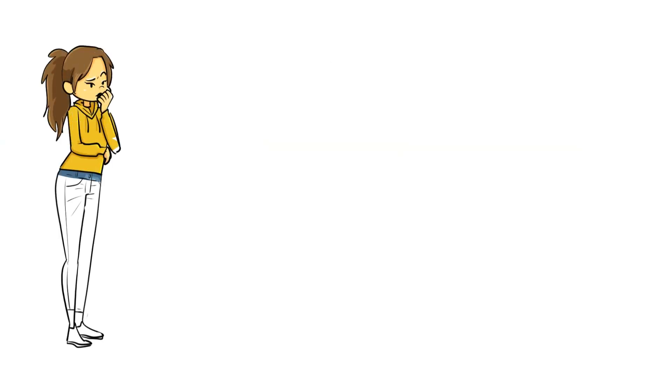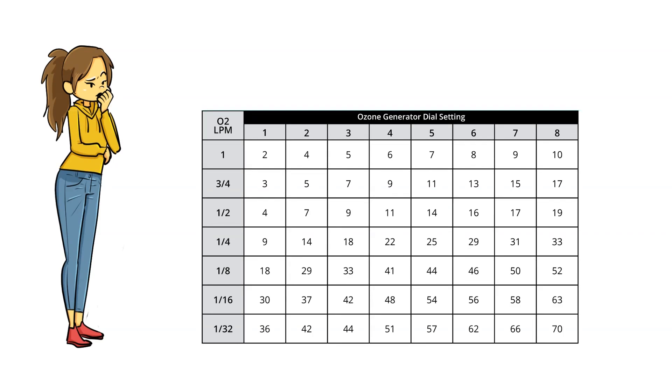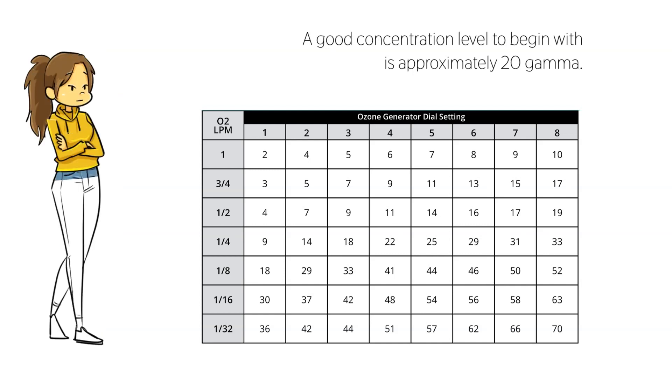For example, let's consider someone that is new to rectal insufflation and using our O3 Elite single generator. A good concentration level to begin with is approximately 20 gamma. In looking at the gamma chart, while exactly 20 gamma is not displayed, there are a couple of settings that would provide roughly 20 gamma.